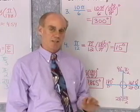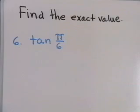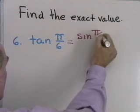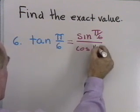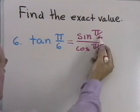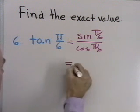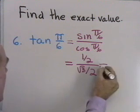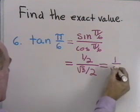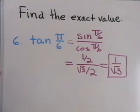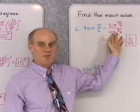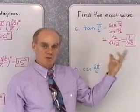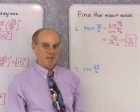Let's find the exact value of some trig functions. For problem 6, find tangent of π over 6. Using the identity, write this as sin(π over 6) over cos(π over 6). Since π over 6 is 30 degrees, sin(30°) is 1/2 and cos(30°) is √3 over 2. So 1/2 divided by √3/2 is 1 over √3. That's the exact value of tan(π over 6). These exact values for sin and cos of 30, 45, and 60 degrees should be memorized.